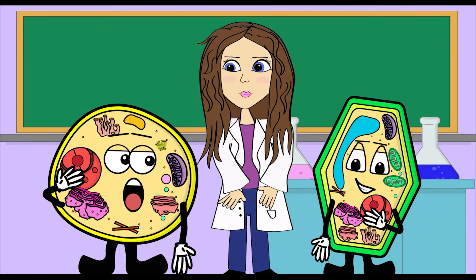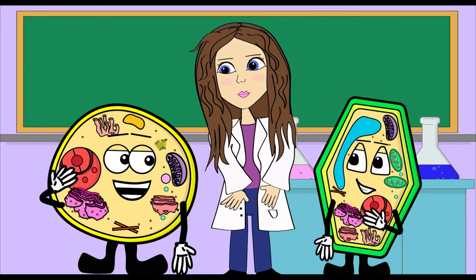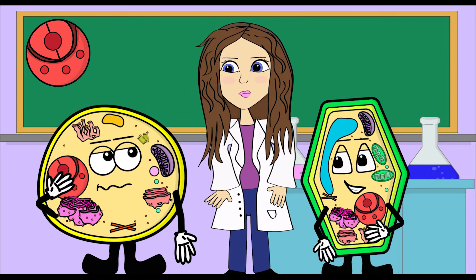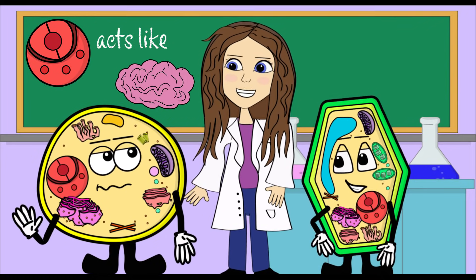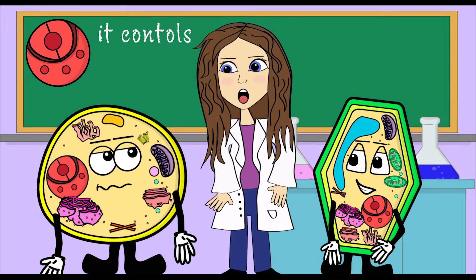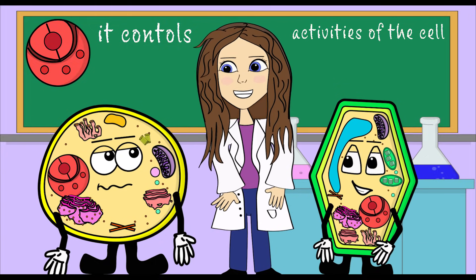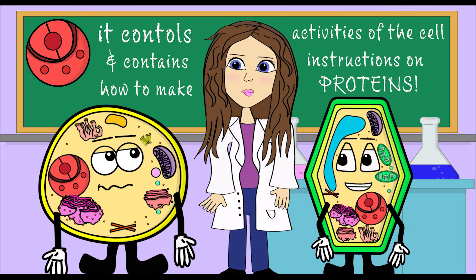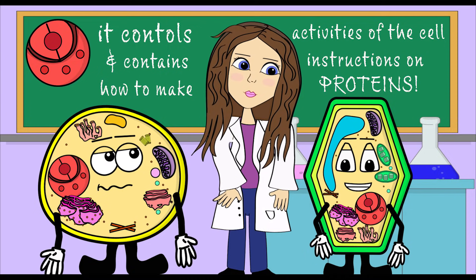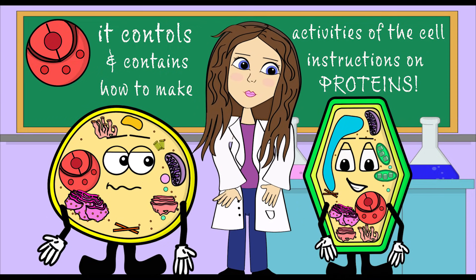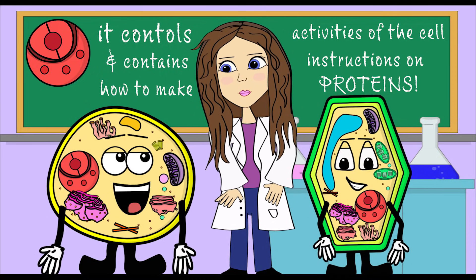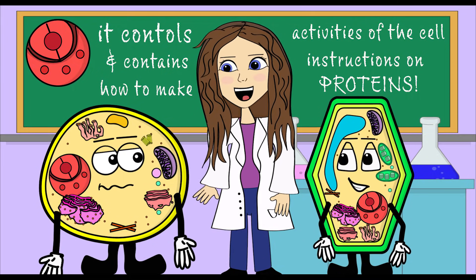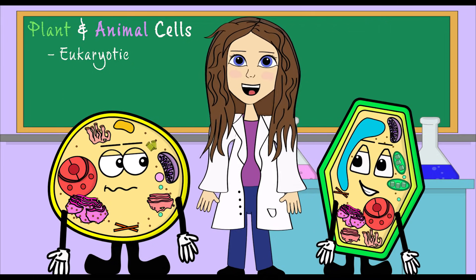Does the nucleus do anything else though? Yes — the nucleus acts like the brain of the cell. It controls the activity of the cell and also contains instructions on how to make proteins. Yeah, what she said! So each one of these little guys has got his own thinker.